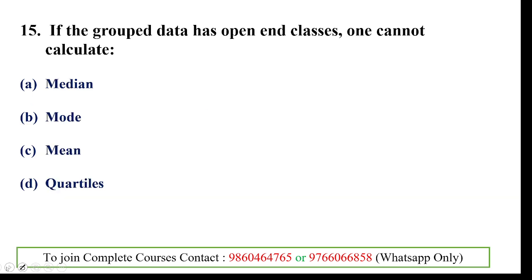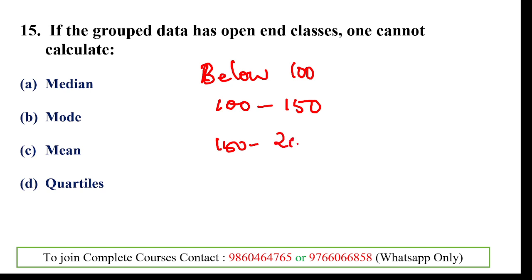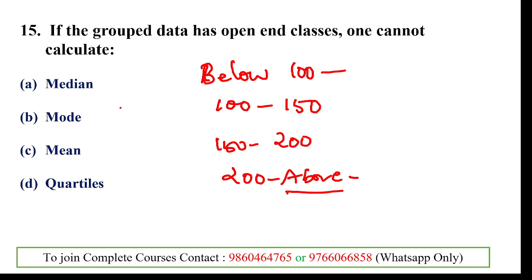Homework question: if grouped data has open-end classes — for example, 'below 100', '100–150', '150–200', '200 and above' — the lower value of the first class and the higher value of the last class are not given. For such data, which of the following cannot be calculated: median, mode, mean, or quartiles? Find the right answer and comment below.